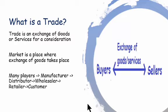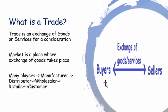Trade is an exchange of goods or services for a particular consideration. Look at this image — there are many buyers and many sellers, and the exchange of goods or services happens here. For example, when you go to a vegetable market, you purchase vegetables for a particular consideration — you give out a certain amount of money to the seller and you get something in return. So you are the buyer and the vegetable vendors are the sellers. The exchange of goods and services happens for a particular consideration at a marketplace.